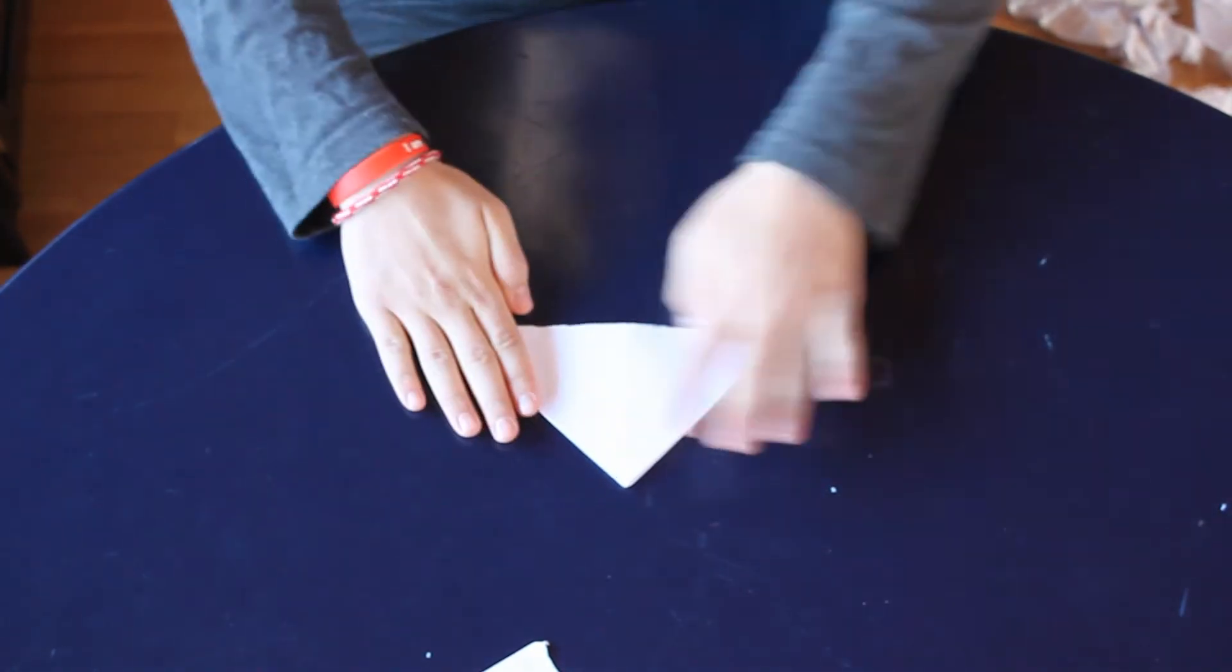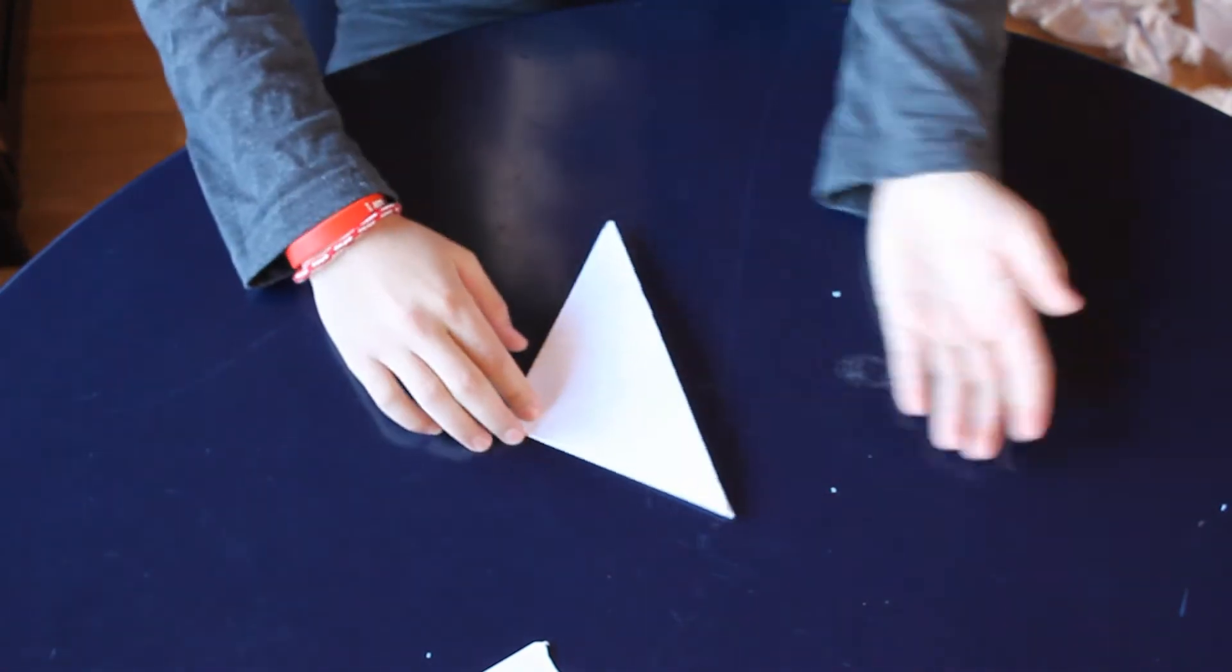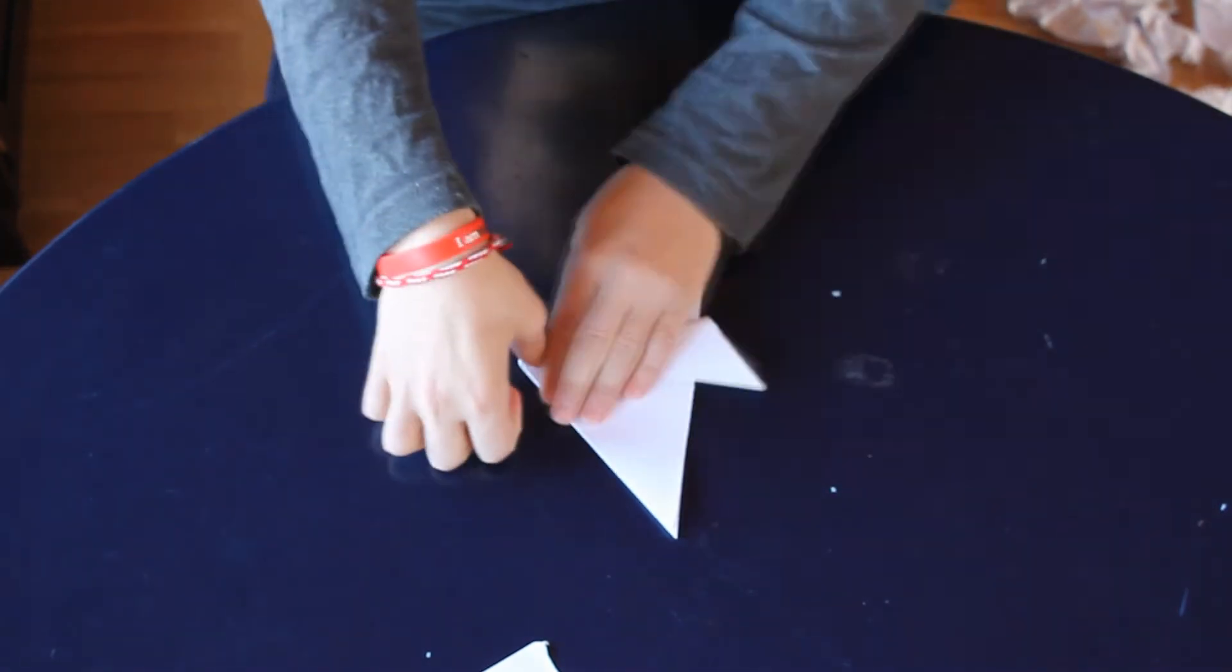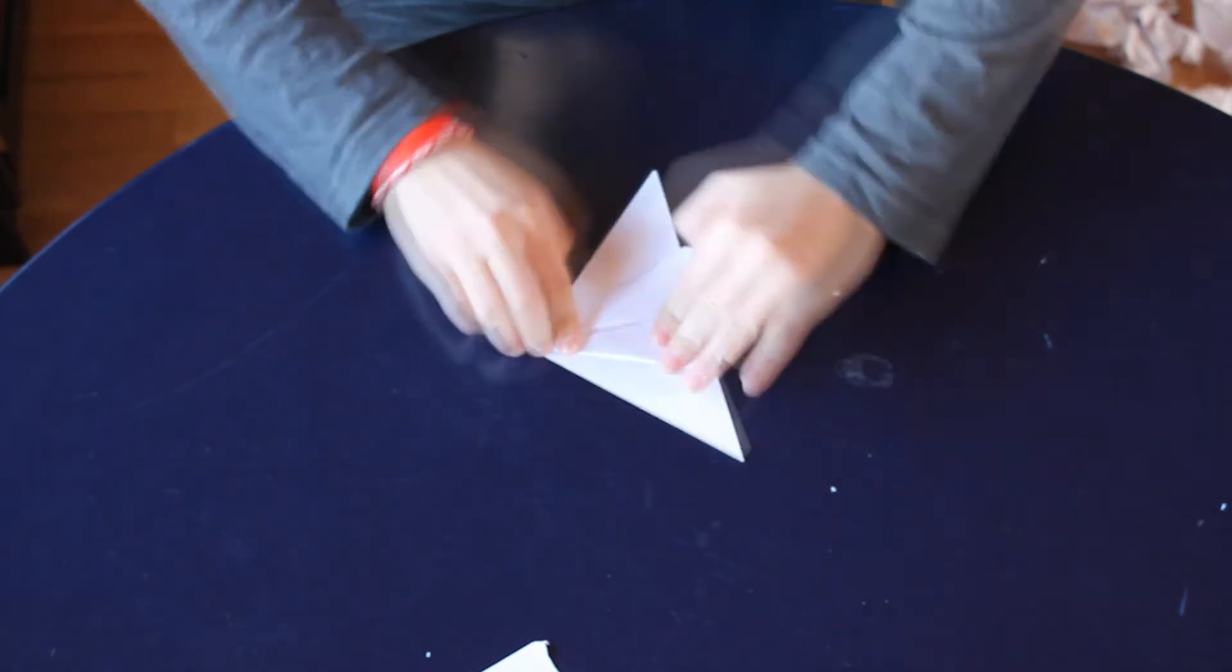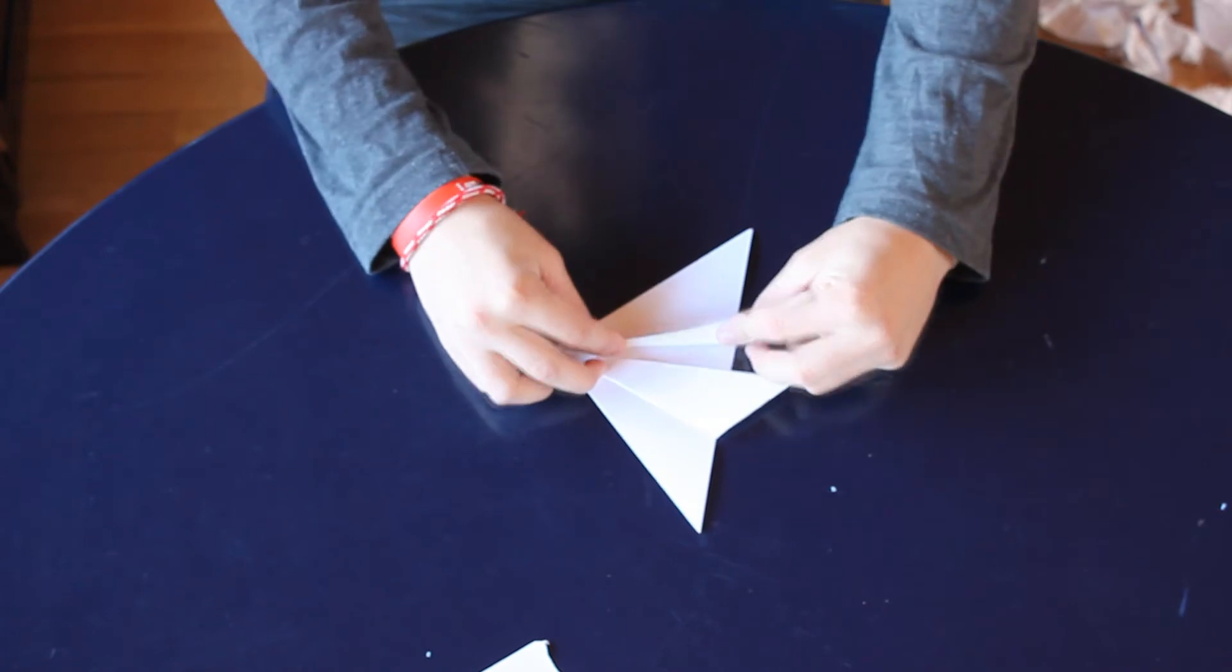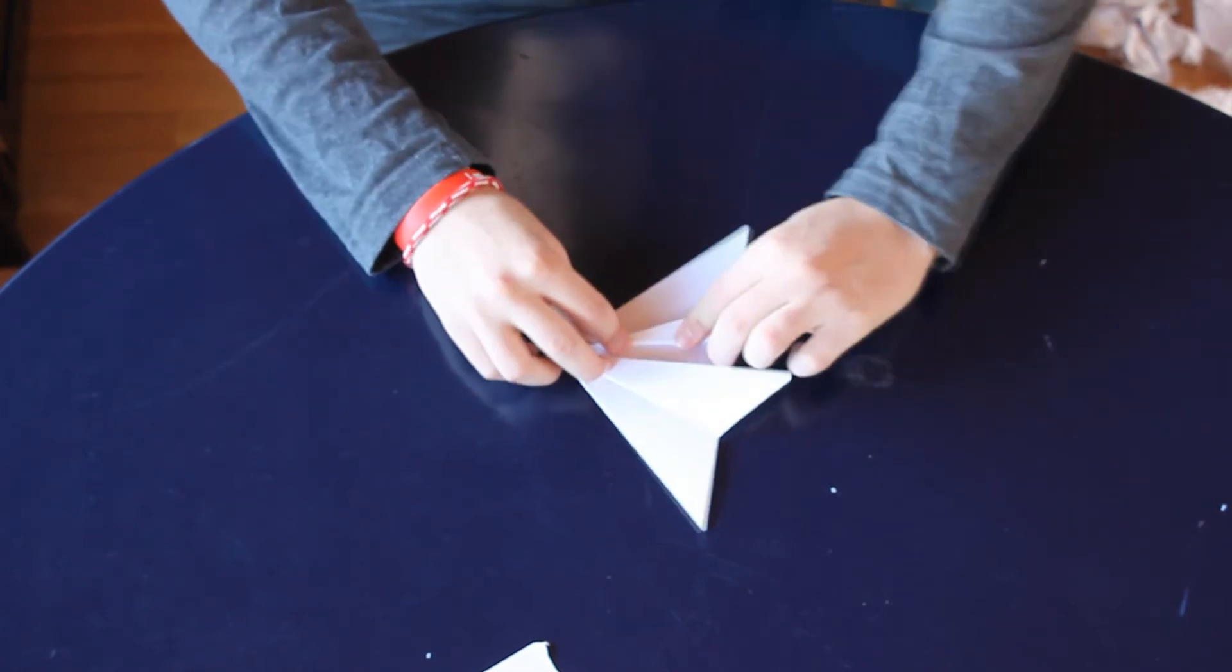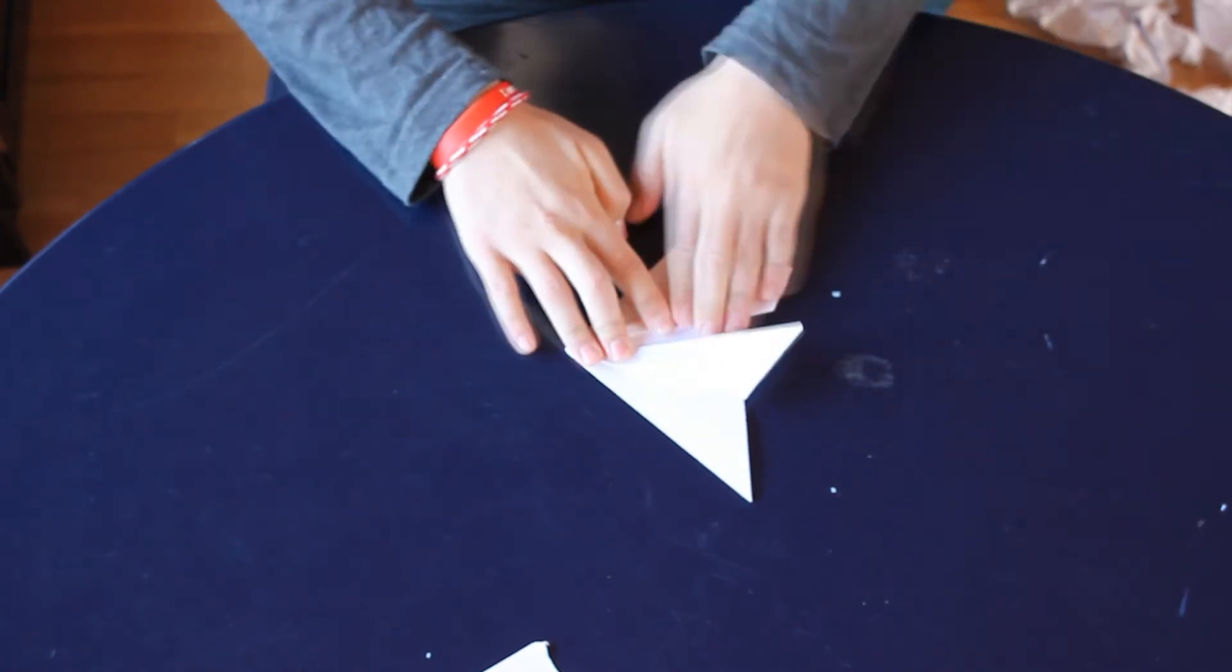Then we make the legs. So take this one, press into the middle like this. Then the other side, do the same, press like this. Then we're gonna fold it once more, double on the same, so it makes a nice foot like this, and do the same to the other side.